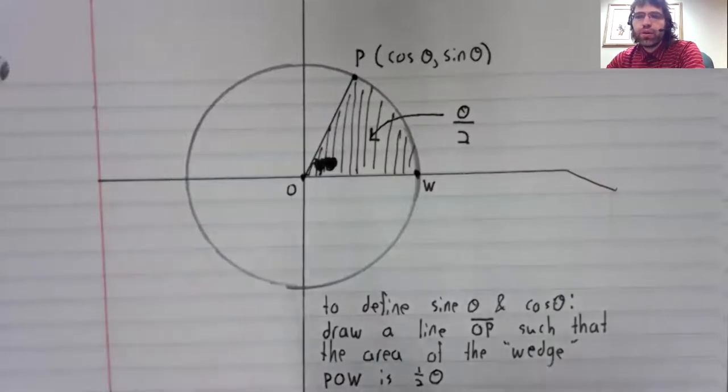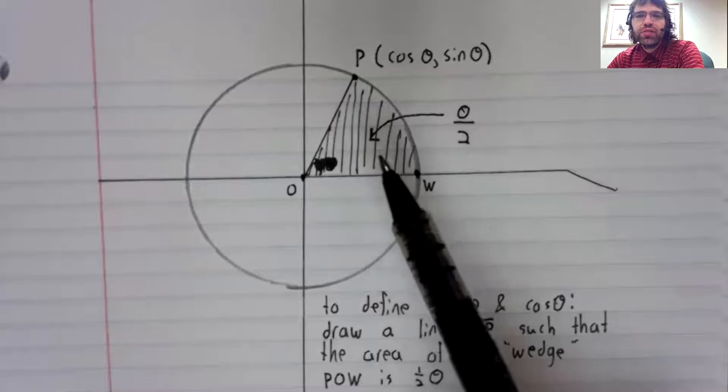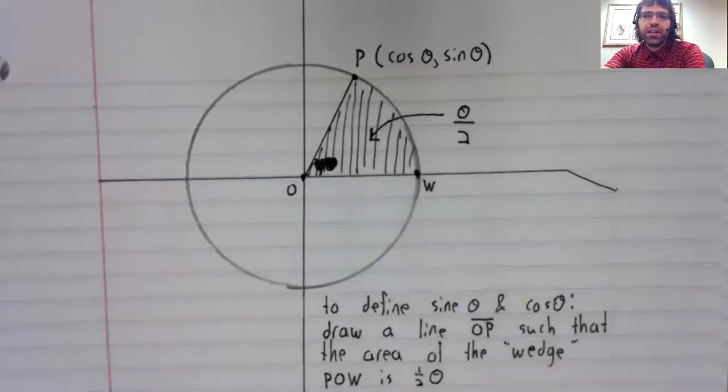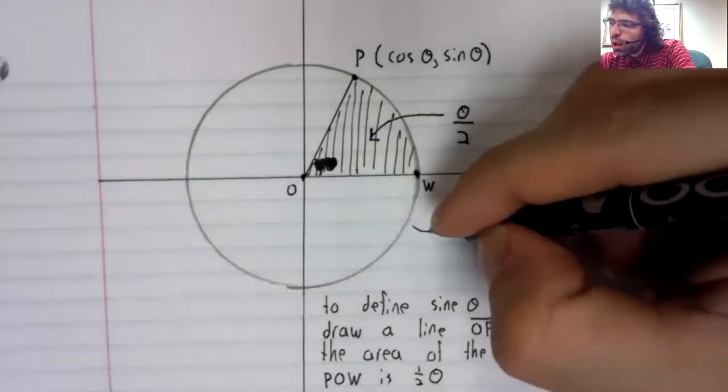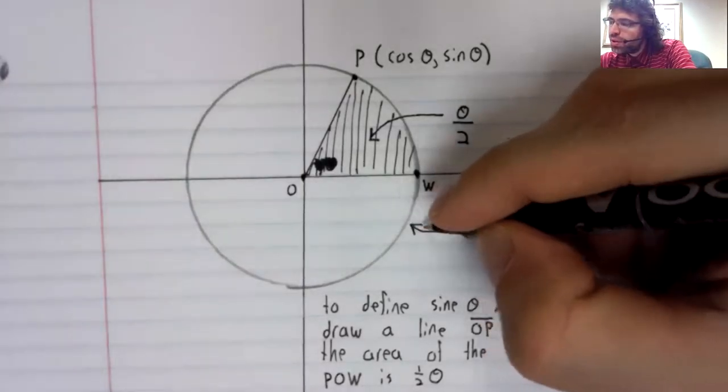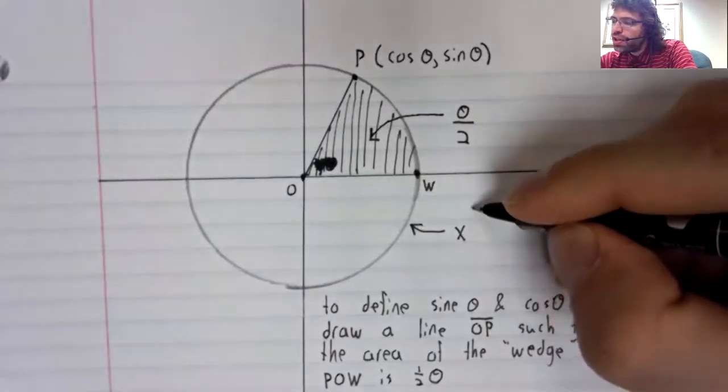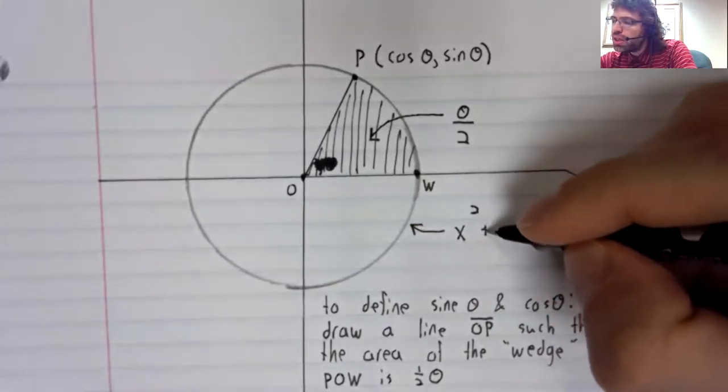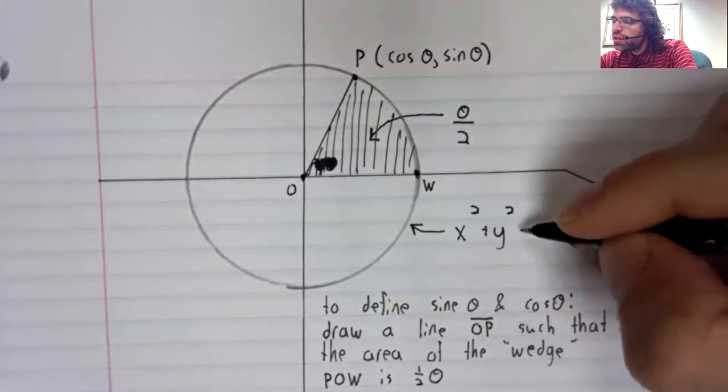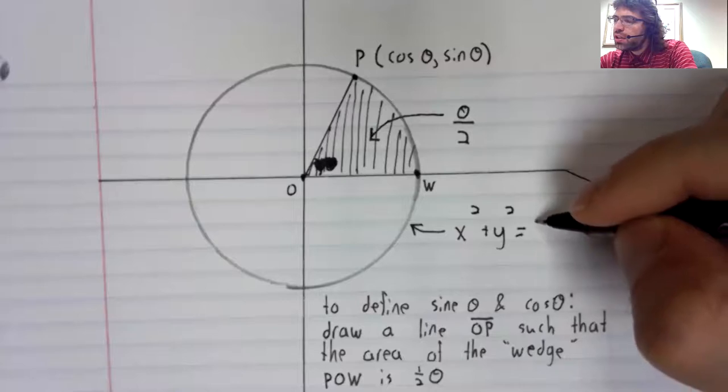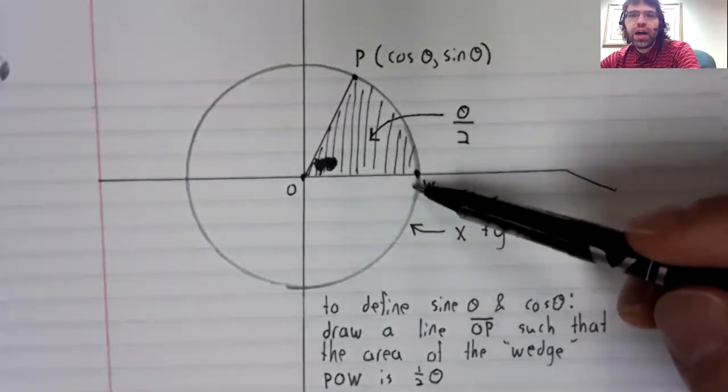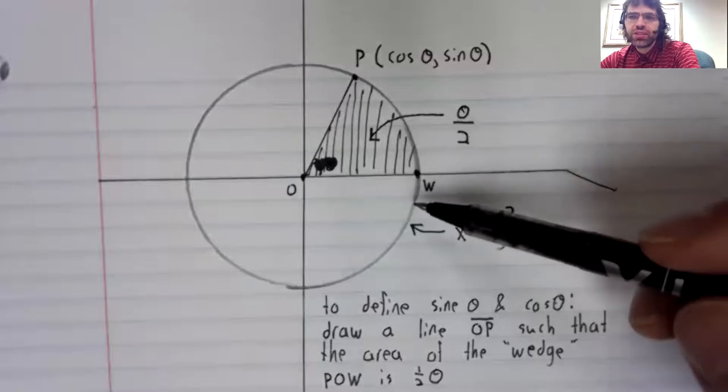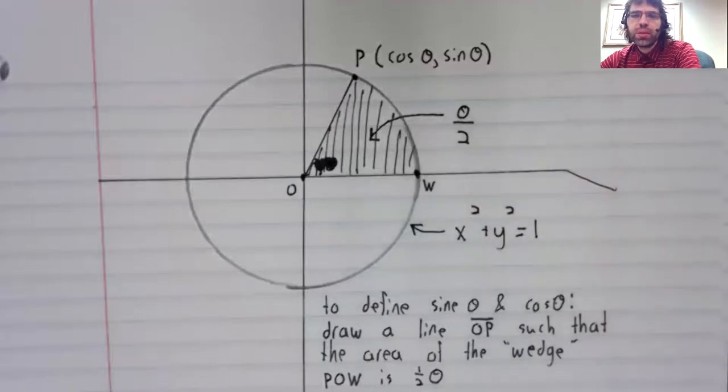However, flawed though it might be, this method of defining the sine and the cosine will make the hyperbolic trig functions make sense. The sine and the cosine here are being defined in terms of a conic section, an ellipse with eccentricity zero.